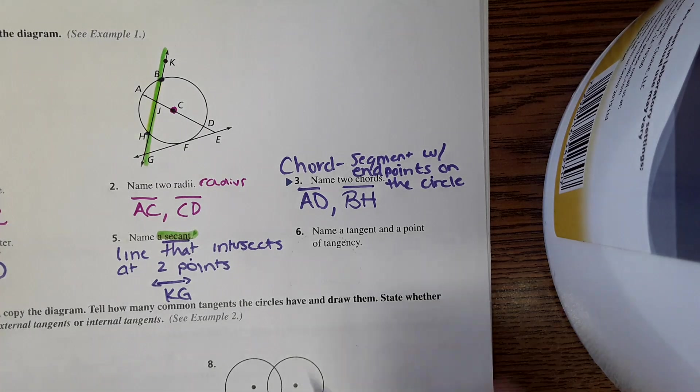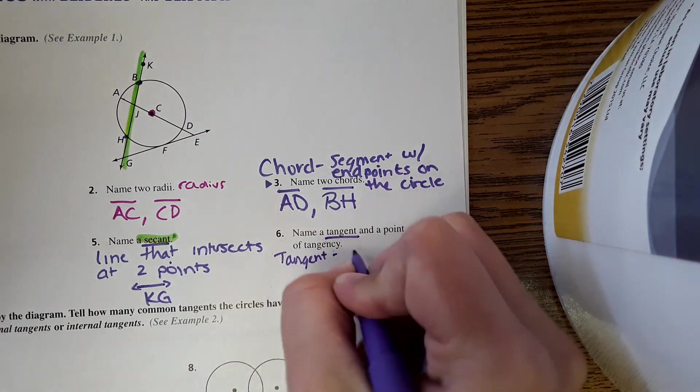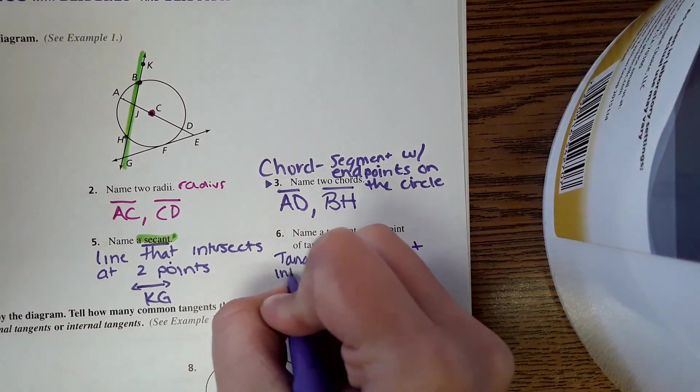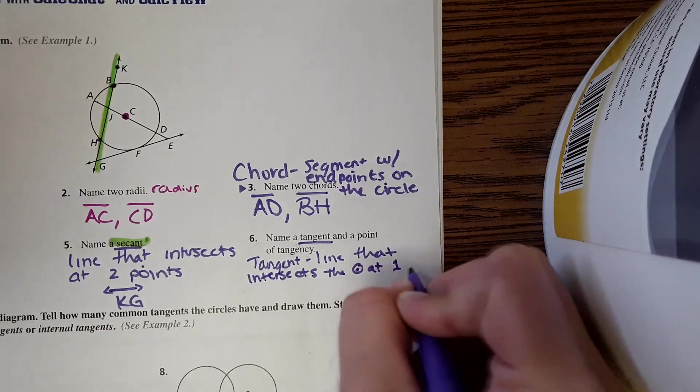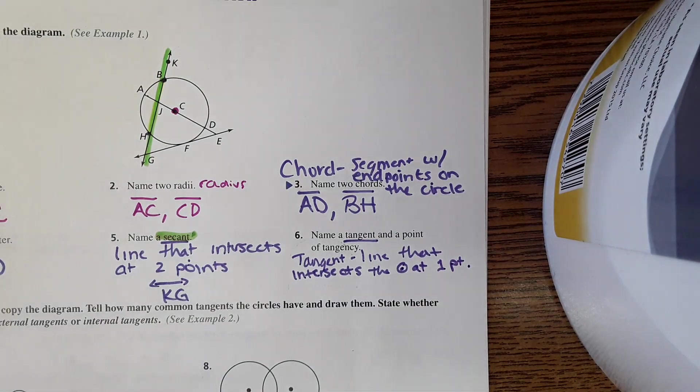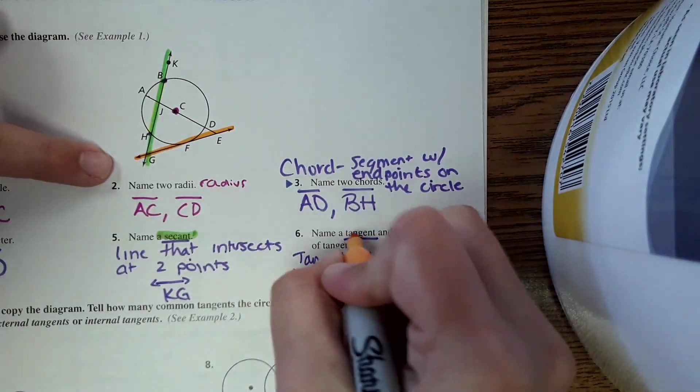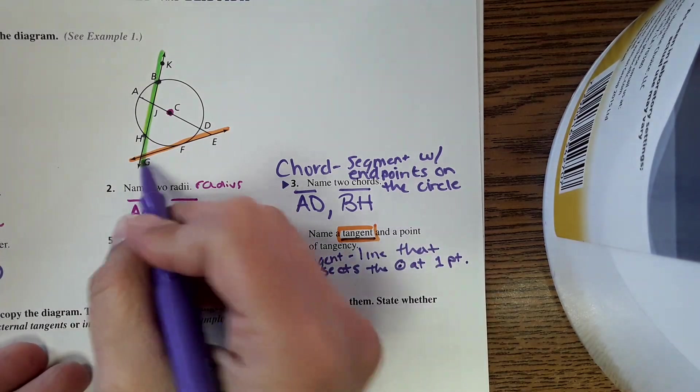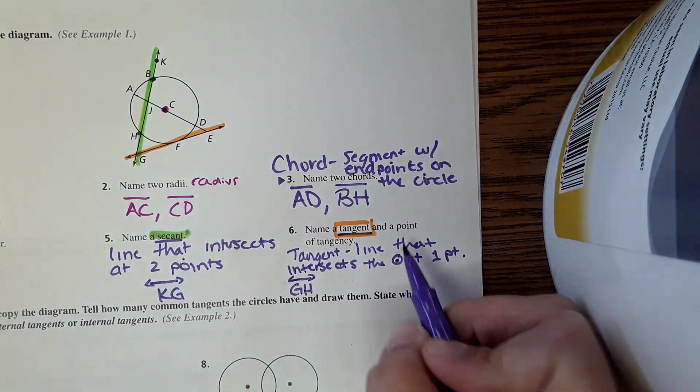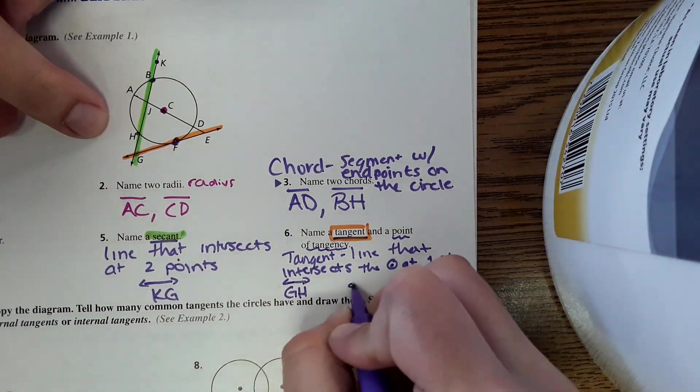And then tangent. What is a tangent? It's a line that intersects the circle at one point. So an example of that in this picture would be this line right here. This is our tangent line. So tangent would be line GE. And then the point of tangency is where it intersects the actual circle, and that would be at F.